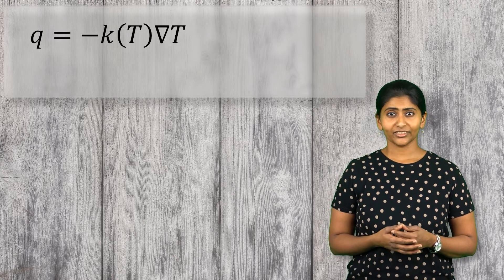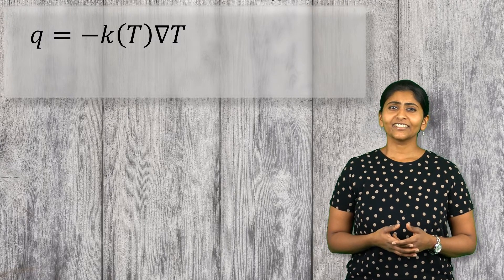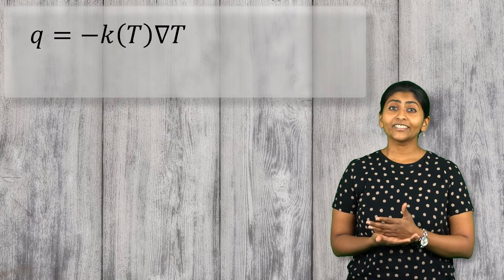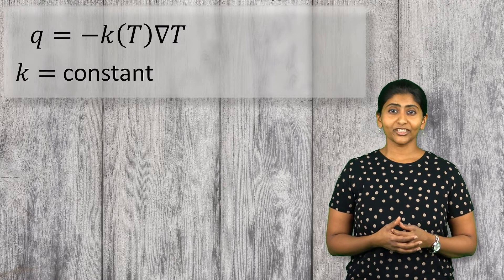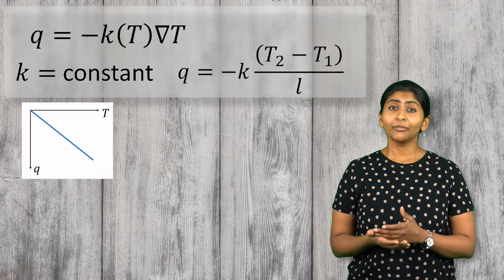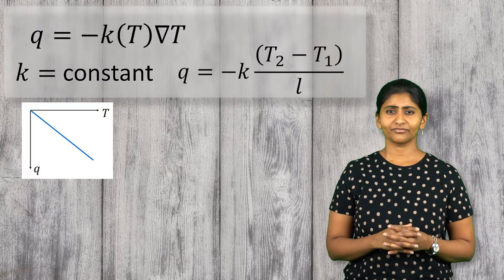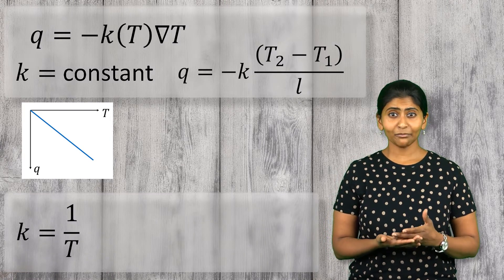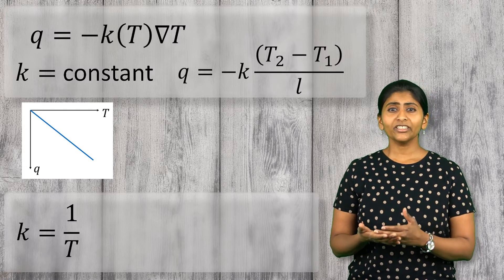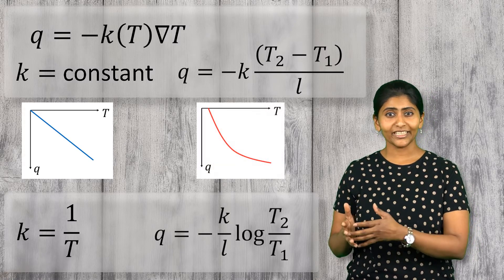This dependence of thermal conductivity on temperature causes Fourier's law to become non-linear because temperature is unknown. For example, let's consider a one-dimensional heat conduction problem for a case when the thermal conductivity is independent of the temperature. When we integrate Fourier's law, we get a linear relation between the heat flux and the temperature. On the other hand, if we assume that the thermal conductivity is inversely proportional to the temperature, we get a non-linear relation between the heat flux and the temperature.